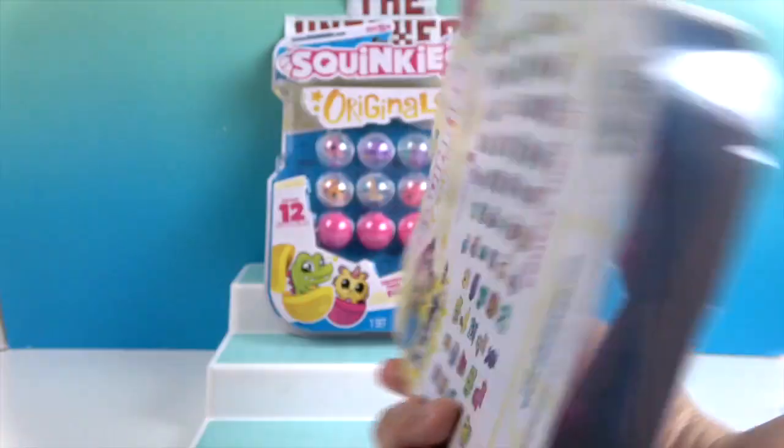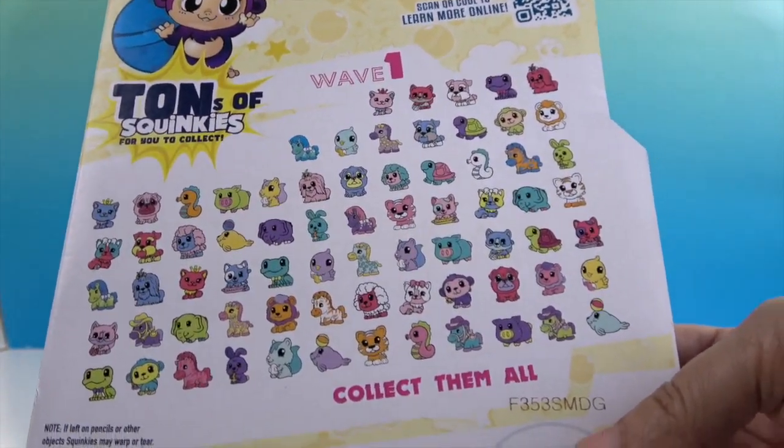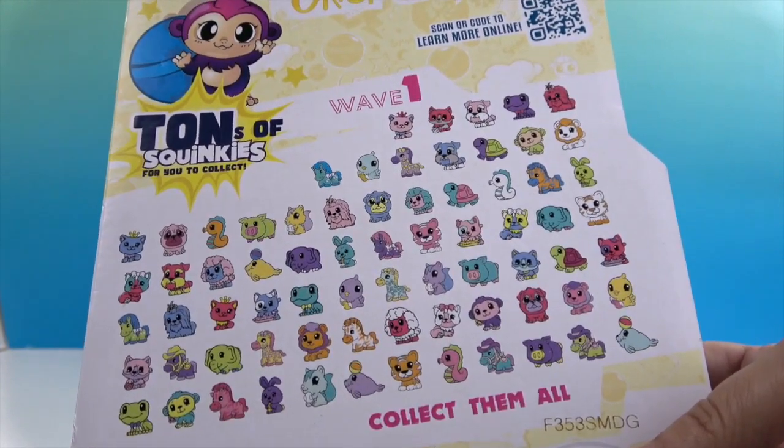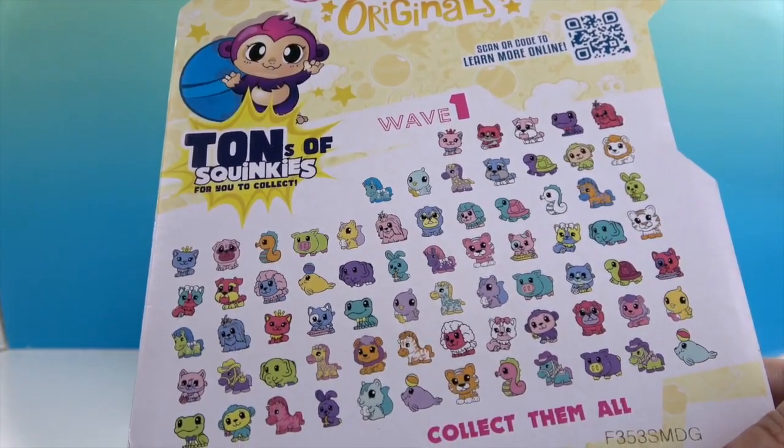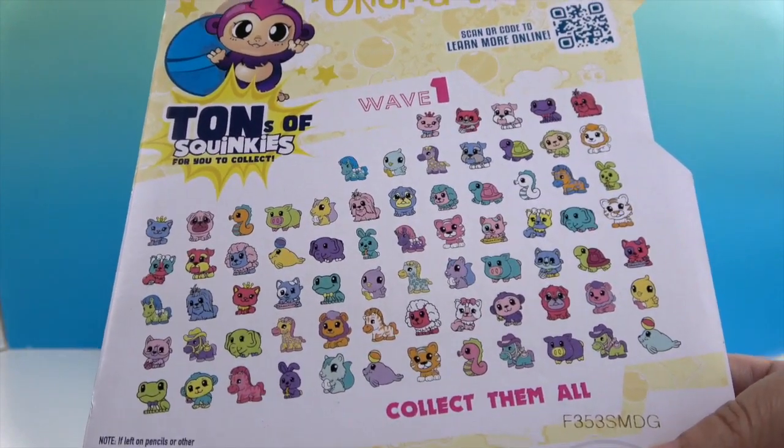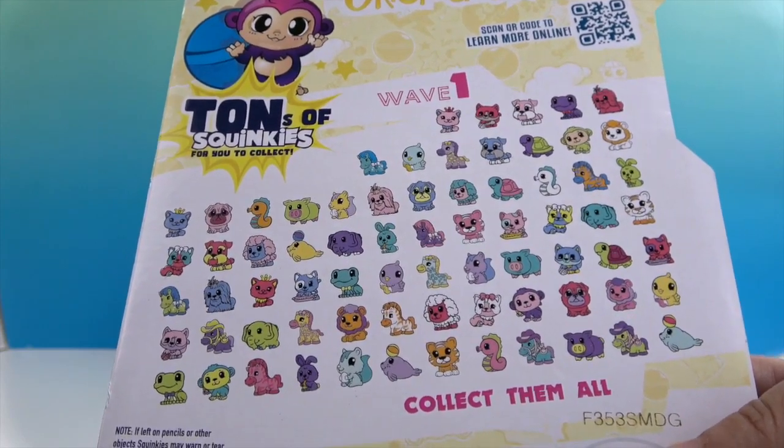I'm hoping there's some kind of checklist in there, but the checklist is probably on the back. That's how we used to do it back in the day - you save the back of the box because that's how you saw them. It says tons of Squinkies for you to collect. There are some really awesome ones - look at the elephant, oh my goodness, so many awesome ones.